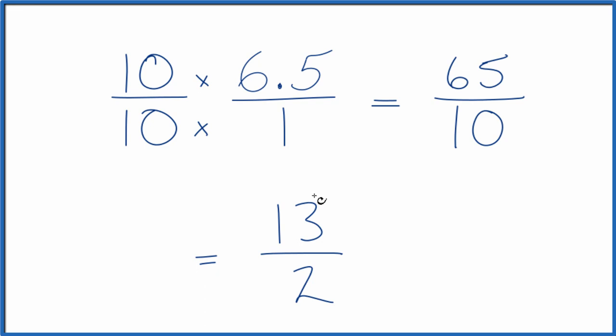This is an improper fraction, the numerator is larger than the denominator. So let's change it to a mixed number. 2 goes into 13 six times with one left over, and then we just bring the two across. So 6 and 1 half, the mixed number, that's equivalent to 13 over 2.